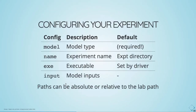Configuring your experiment: you have to have a model. The name defaults to the same as your experiment control directory. The executable defaults to something set by the driver, but for AccessOM2 models the executable path is explicitly defined. You must have the model inputs — those can be any number of directories specified with a dash in front, and those are all the places PayU will go to find inputs. Those paths can be absolute or relative to the laboratory path.